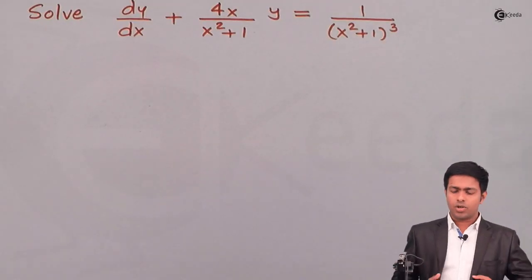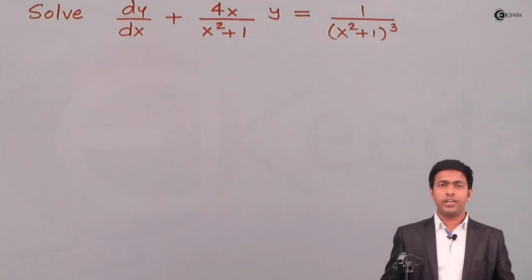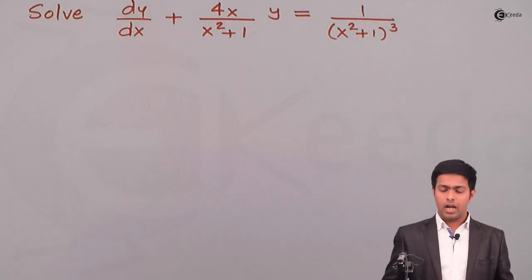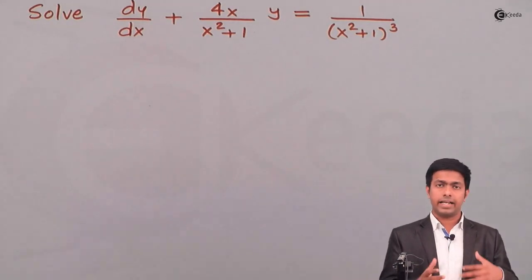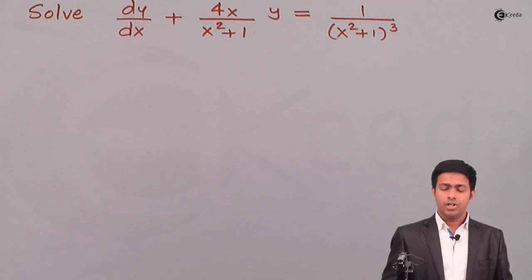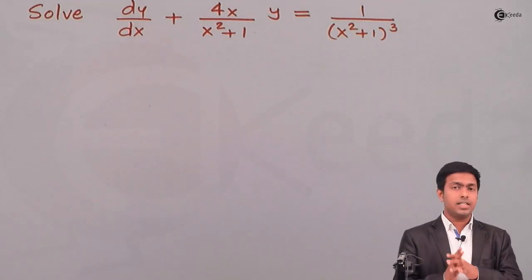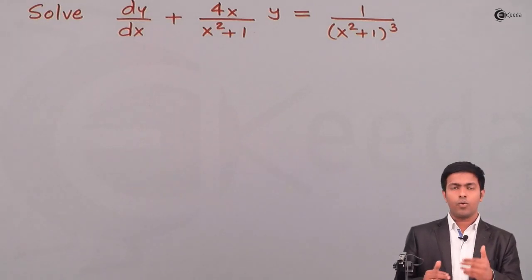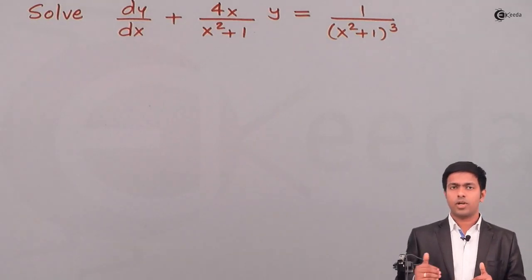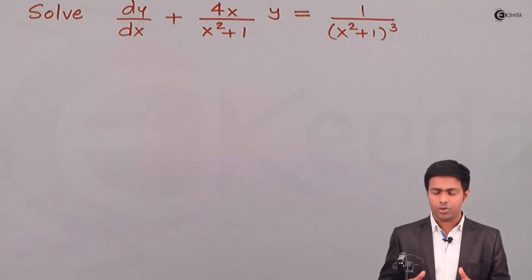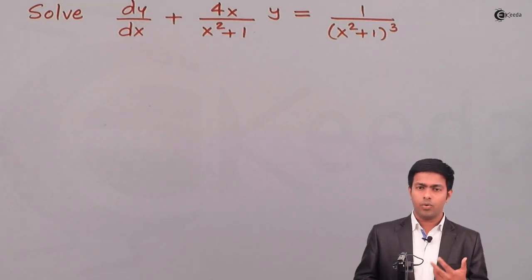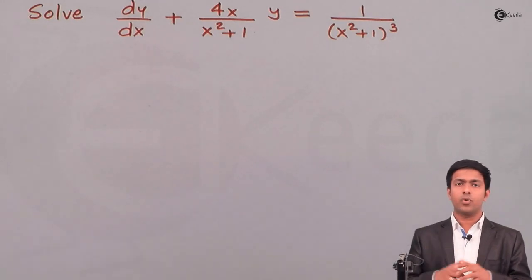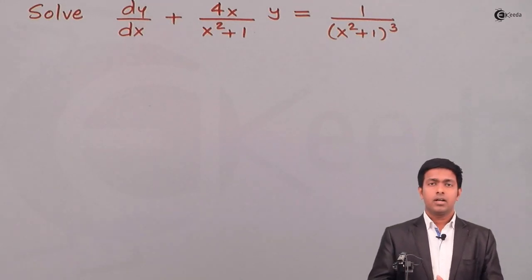Hello friends. Here we have a differential equation which we have to solve and get the solution. The equation is dy/dx plus 4x upon (x² + 1) into y equals to 1 upon (x² + 1)³.